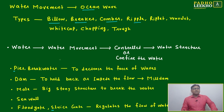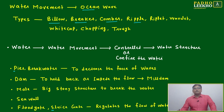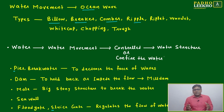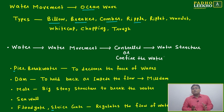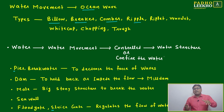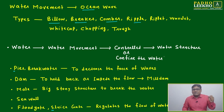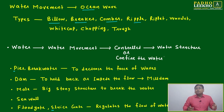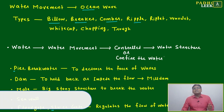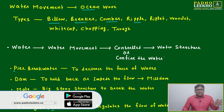When water movement is controlled or confined for some purpose, we need to make structures. For example, to generate hydroelectricity, water should be locked at a particular height. When released from that height, it creates pressure and rotates a turbine fan.